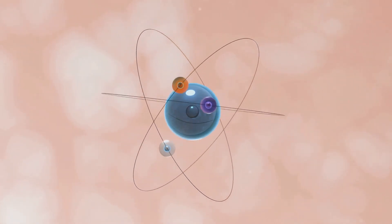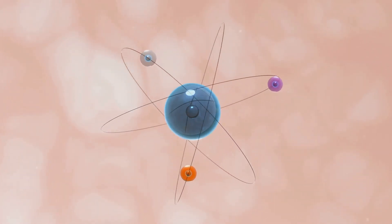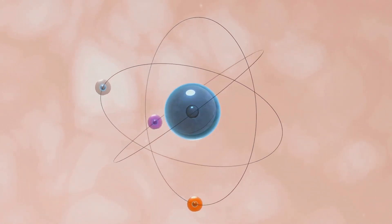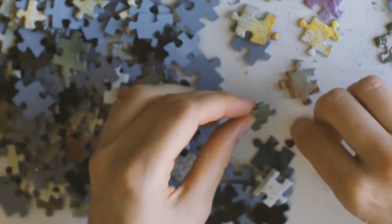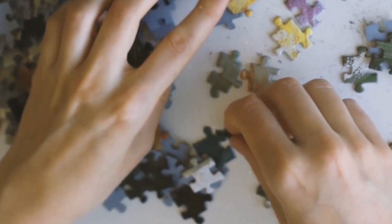This exotic substance is thought to have existed in the first microseconds after the Big Bang. Studying quark-gluon plasma allows scientists to probe the fundamental forces that govern the universe. It helps us understand how the universe evolved from a formless state into the complex structures we see today. These experiments provide a glimpse into the earliest moments of our universe, helping us piece together the story of how everything came to be.